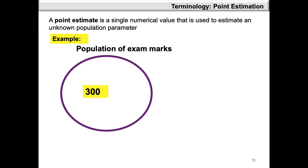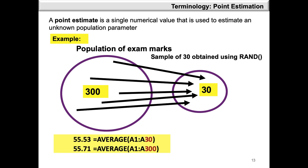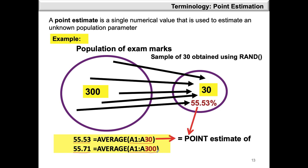Suppose we have a population of 300 exam marks and we are interested in taking a sample of 30 marks. We can make use of the RAND function in Excel or the random number generation tool in the data analysis tool pack. To compare the average values from the sample, we use the AVERAGE function in Excel and find that the sample mean is 55.53, as we took the average of 30 values. The population mean is 55.71, where we took the average of all data points in the population. So we can report that 55.53 is the point estimate of the population average, which is 55.71.